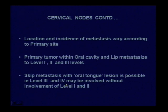The location and incidence of metastasis in the neck varies according to the primary site. For primary tumors within the oral cavity and the lip, metastasis is invariably to level 1, level 2, and level 3 lymph nodes — that is submental, submandibular, upper jugular, and middle jugular.